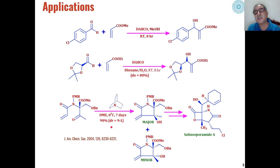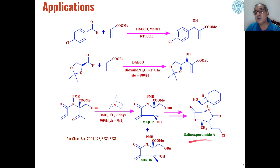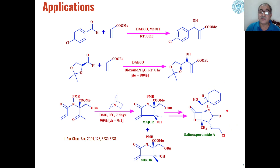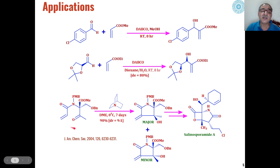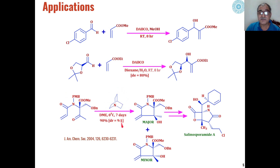The Baylis-Hillman reaction is also used for the synthesis of biologically active compounds like seleosporamide A, which is used as a precursor for some drugs. This can be synthesized starting from substrates that can undergo Baylis-Hillman reaction in the presence of tertiary amines.